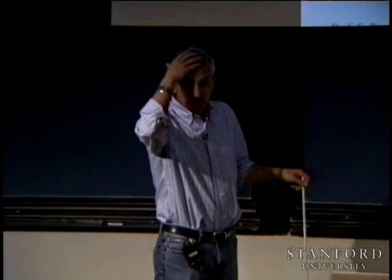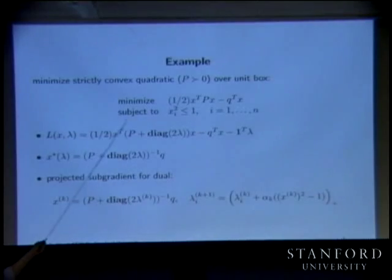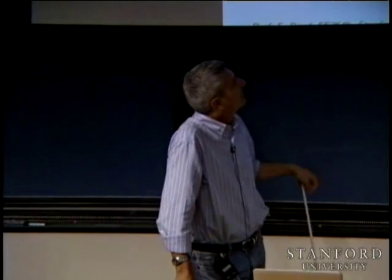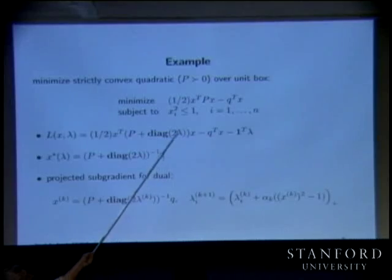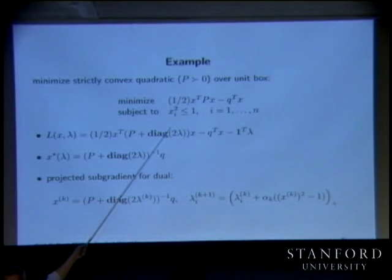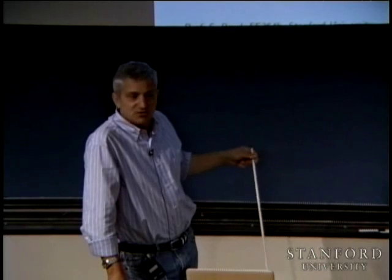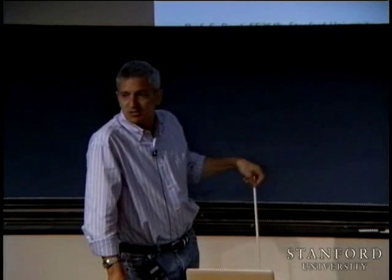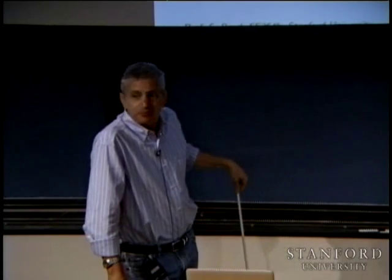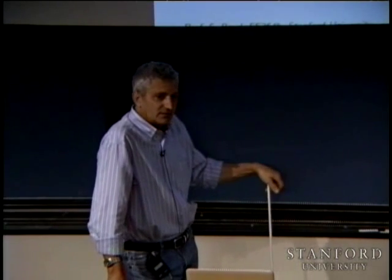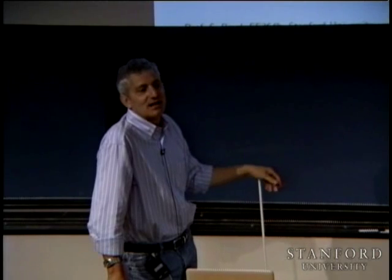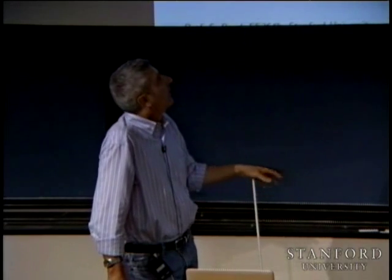These are not endorsements of these methods — in fact they only make sense to use in very special circumstances. If you just want to solve a box-constrained QP where x is only 2,000 dimensions, you are way better off using the methods from 364A — that's just an interior point method.